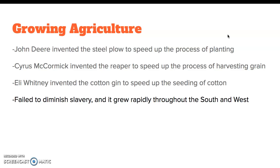Eli Whitney originally came up with the cotton gin as a way to try and control the spread of slavery, thinking that if he created something to seed cotton faster, they wouldn't need as many slaves to work. However, it just made the cotton industry in the South more profitable, which allowed plantation owners to have more money to buy more slaves, to pick more cotton, to make more money, and so on. So it failed to diminish slavery and it grew rapidly throughout the South and Southwest.